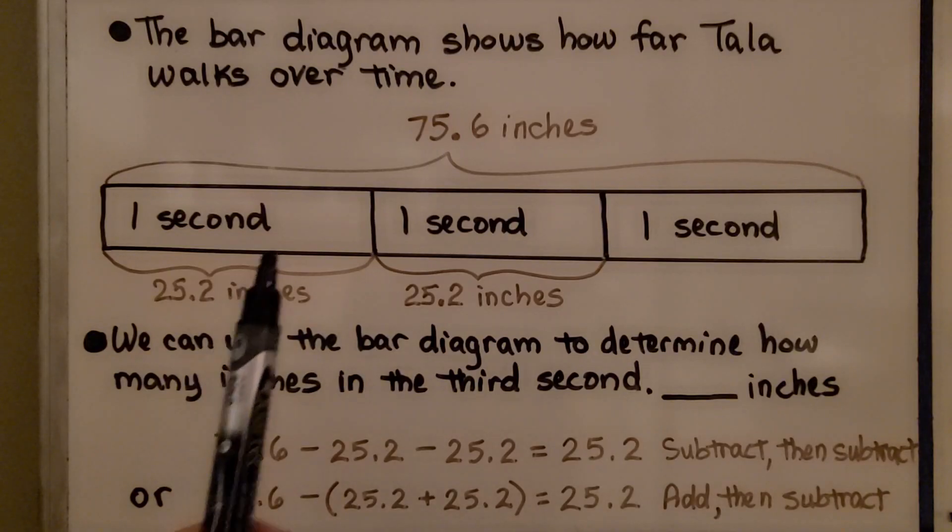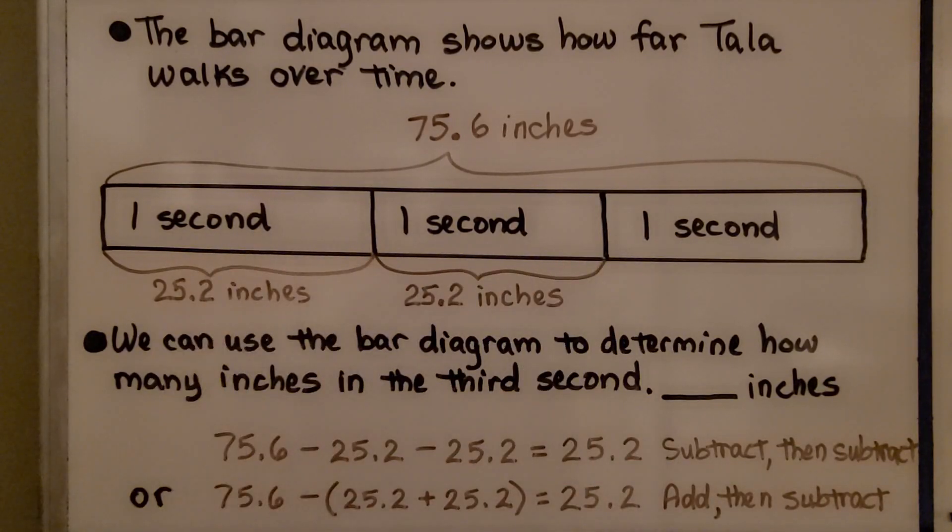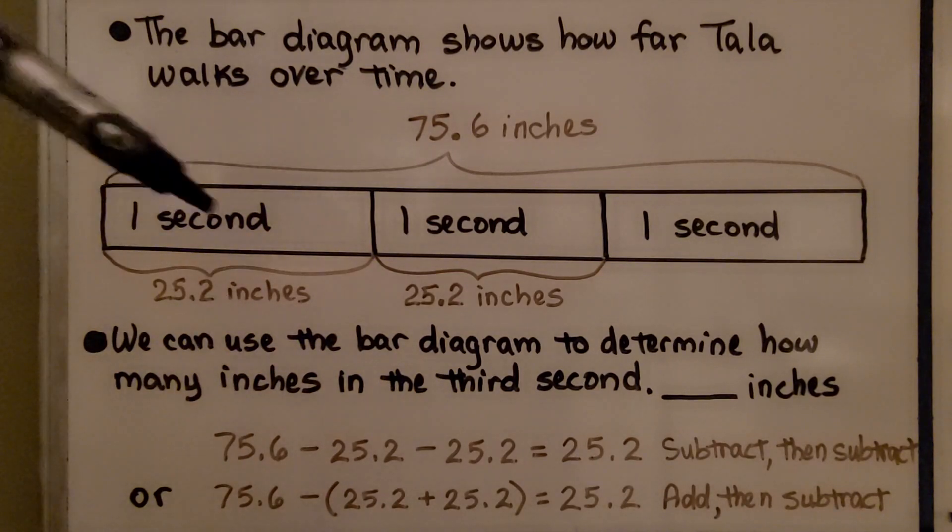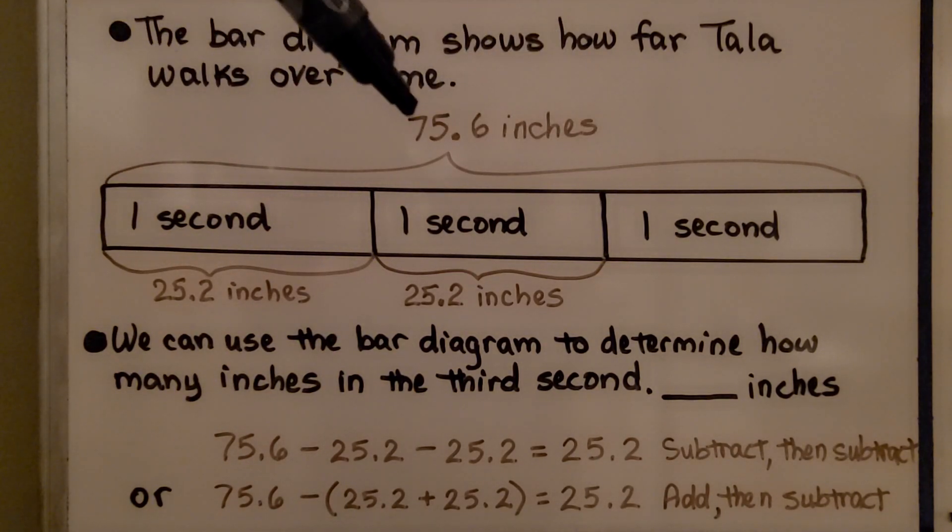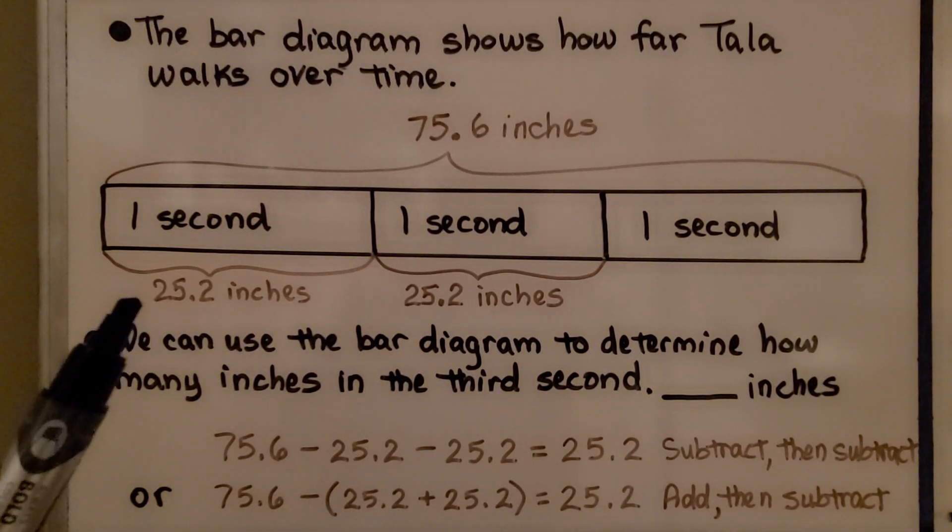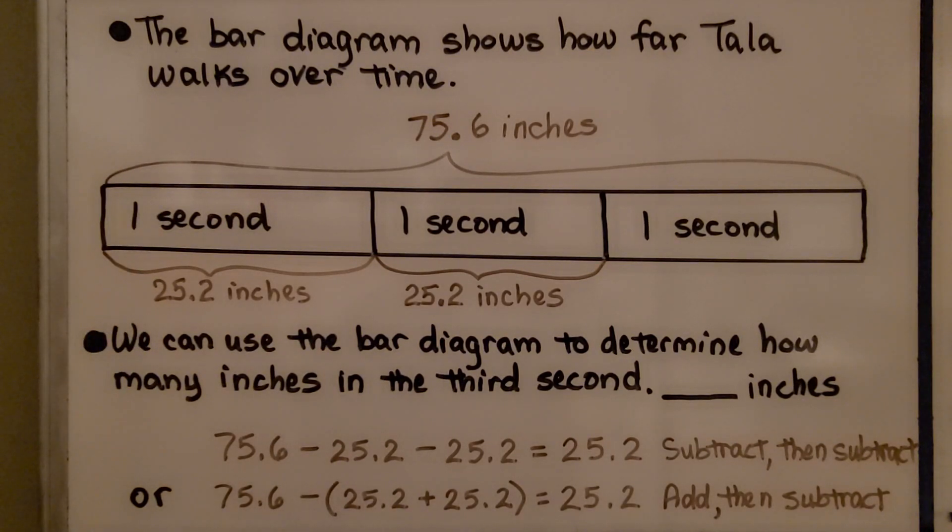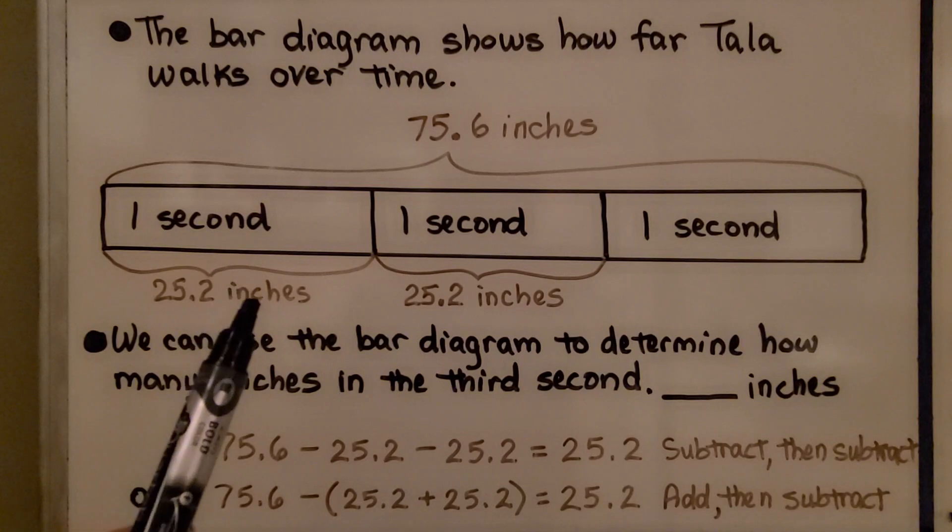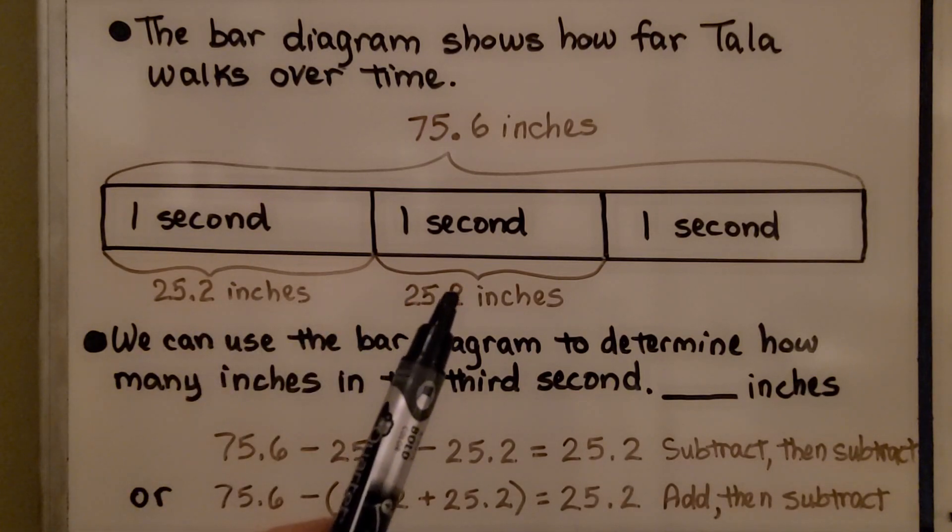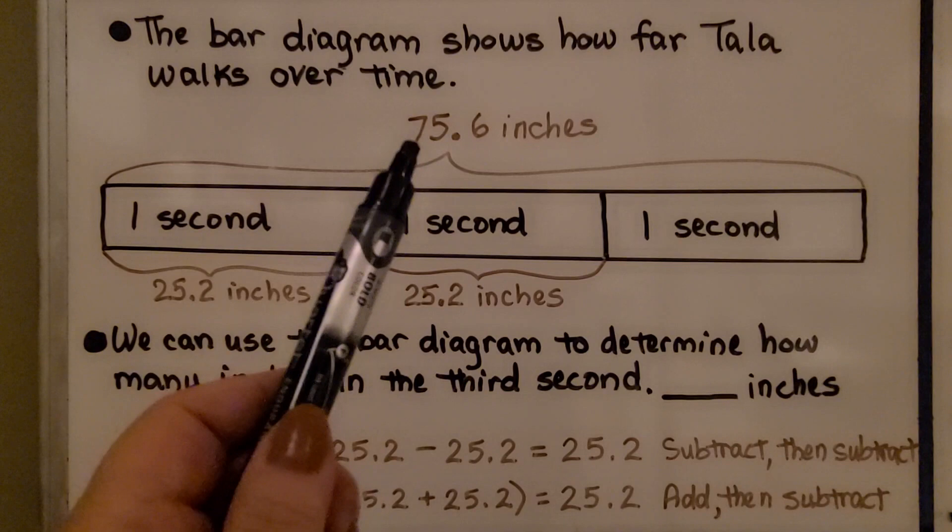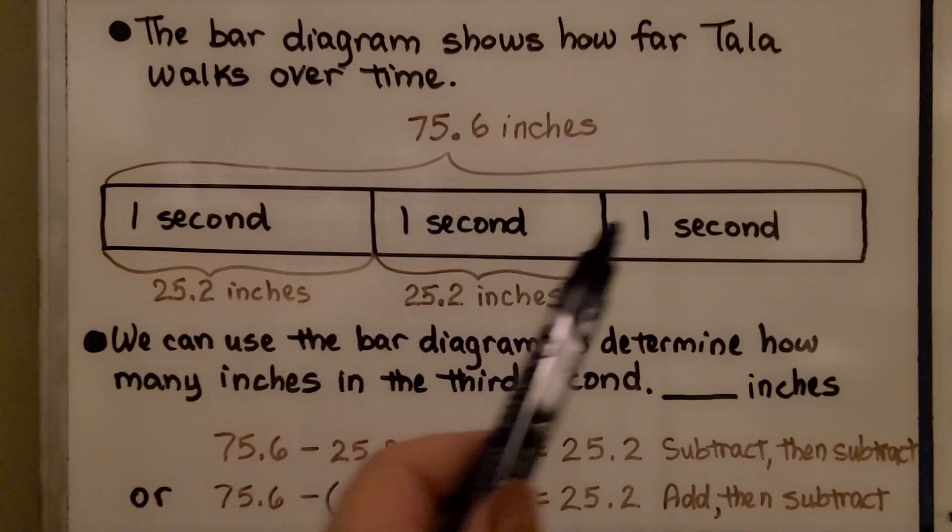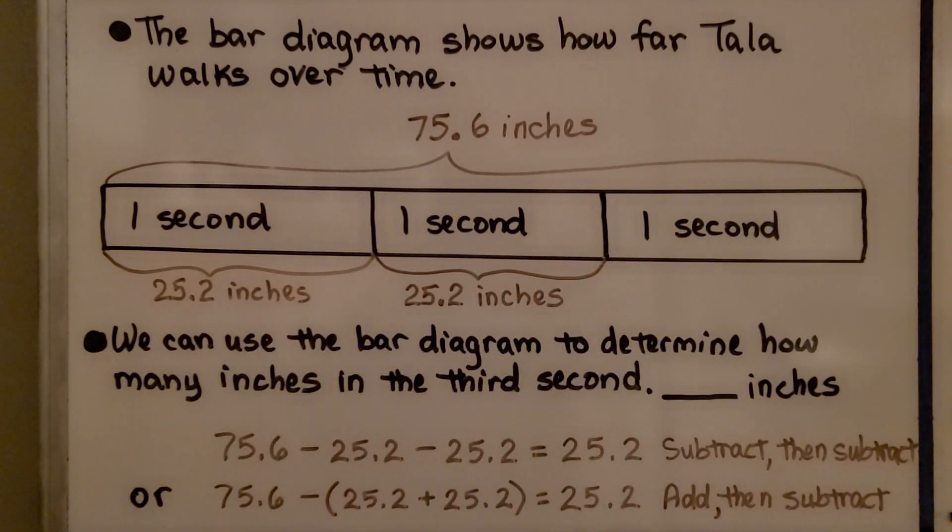Here we have a bar diagram, and it shows how far Tala walks over time. We have three seconds. She can walk 75.6 inches in these three seconds. She can walk 25.2 inches in one second. We can use the bar diagram to determine how many inches is the third second. We see that it's 25.2, 25.2, and if we divide 75.6 inches by three, we're going to get another 25.2.